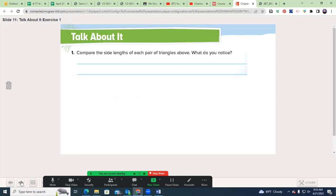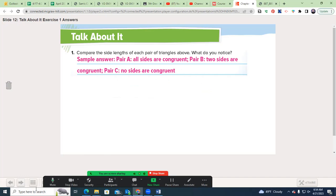So comparing the side lengths of each pair of triangles above, what did you notice? You would have noticed pair A was equilateral, pair B isosceles, and pair C, scalene, or no sides congruent. Any time you want to write in one of these talk about it sections, you may. And you're also welcome to talk about it with somebody at home if you're watching this video in the comforts of somewhere outside of my classroom.